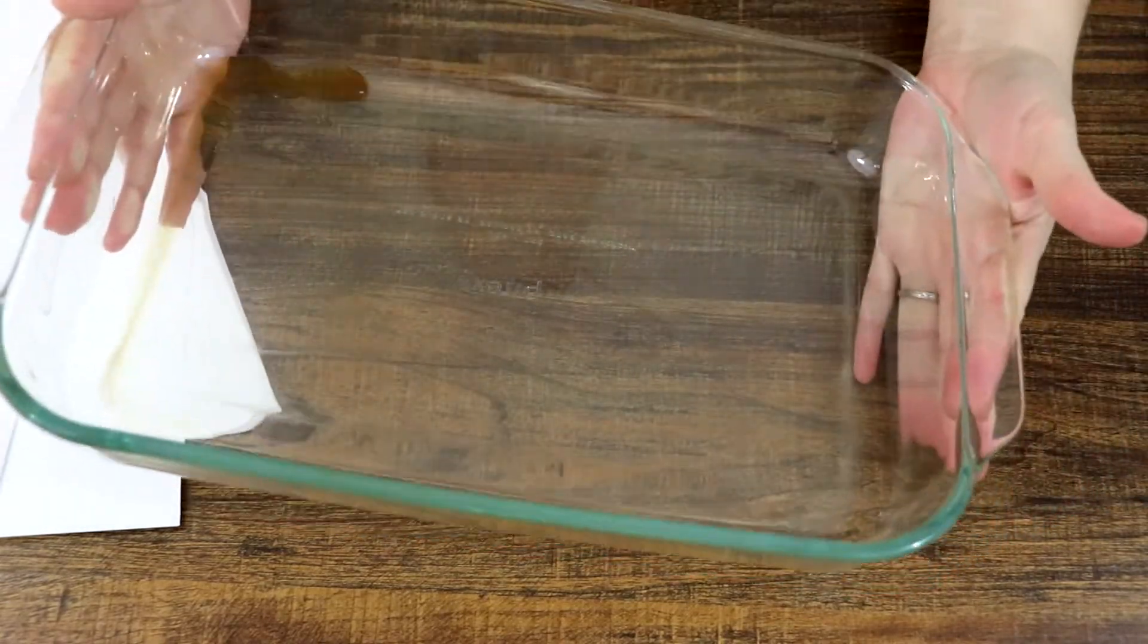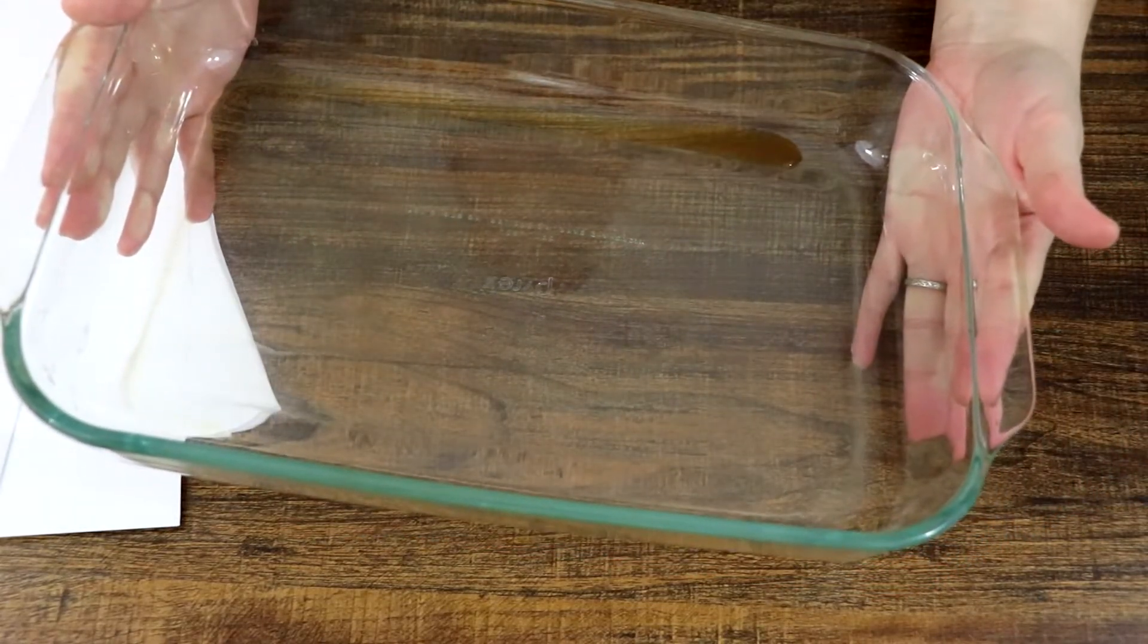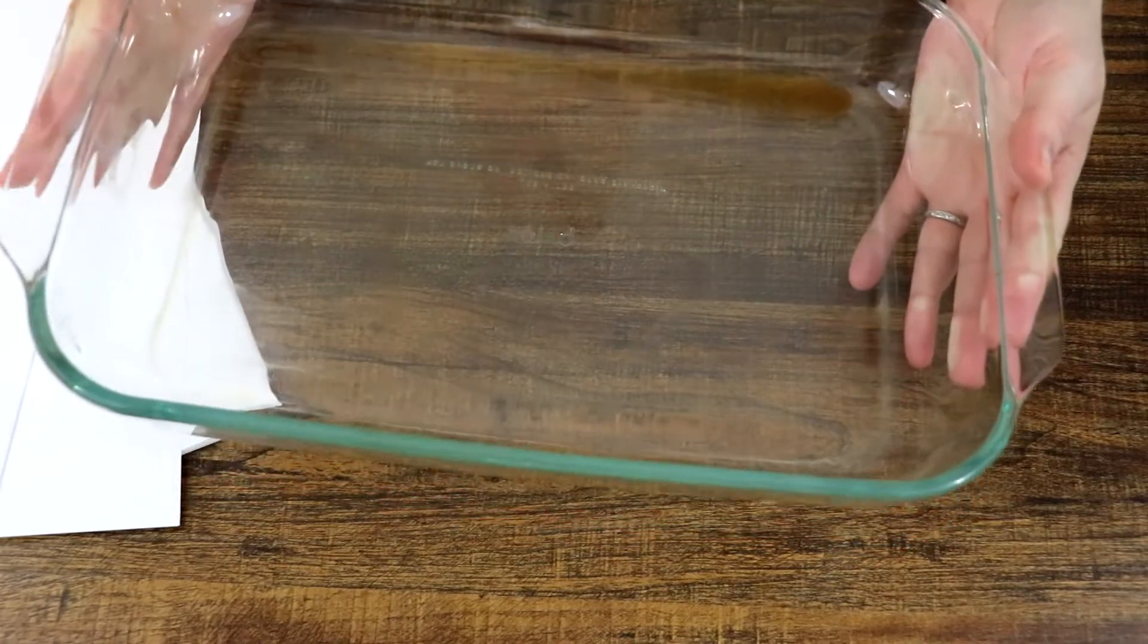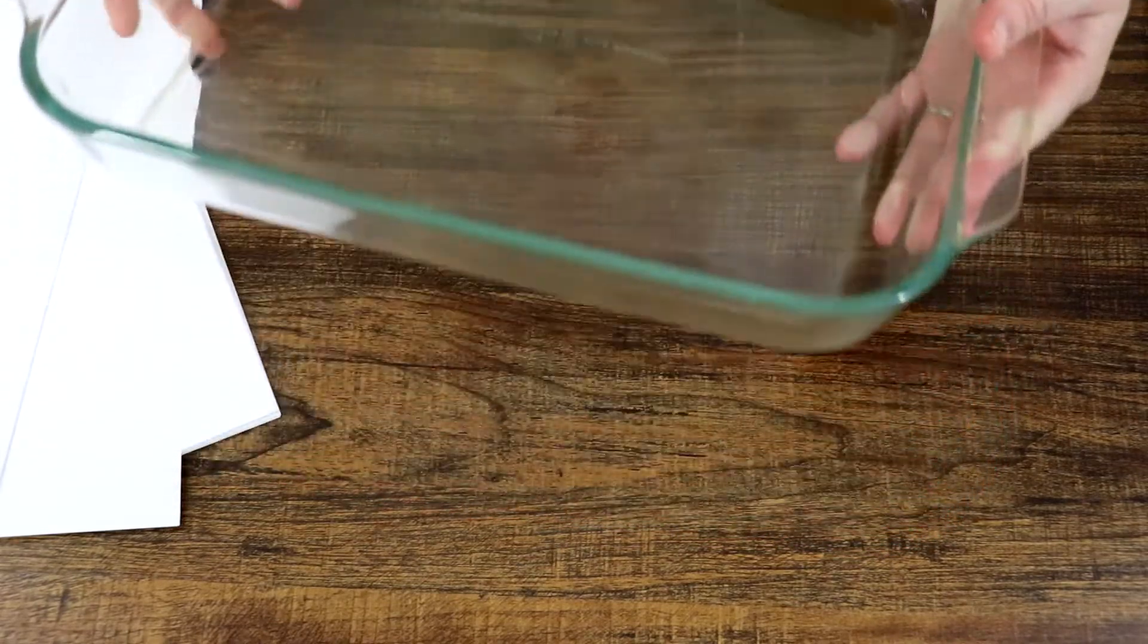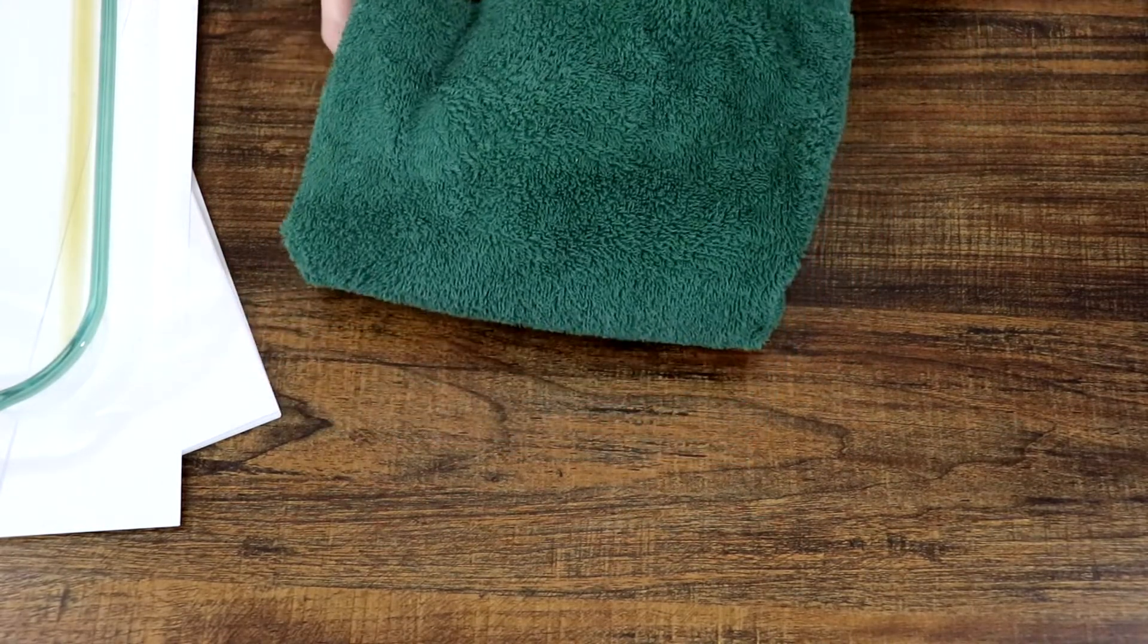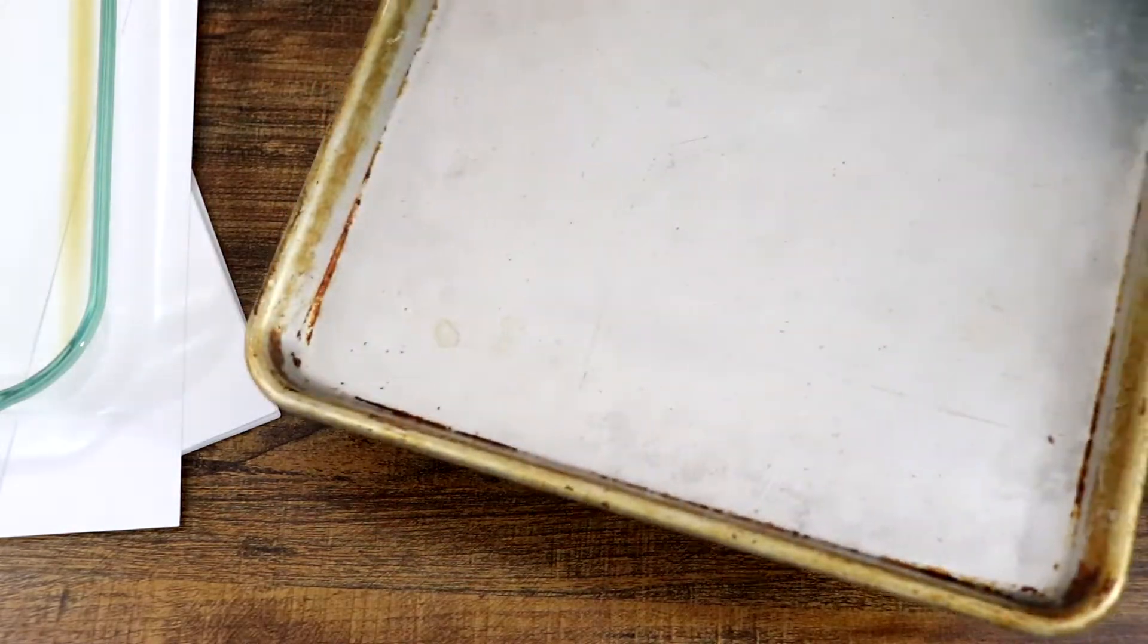You're going to need a baking dish or a rimmed cookie sheet in order to dye your stuff. An old towel—tea does stain, so just keep that in mind. And some kind of cookie sheet because you are going to be putting these in the oven.